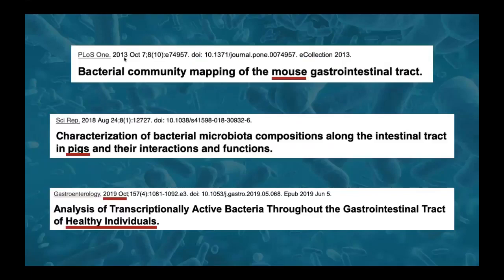Several studies illustrate the difference between the upper GI microbiome and the microbiome in the large intestine, including a bacterial community mapping of the mouse GI tract, a characterization of bacterial microbiota in pigs, and an analysis of transcriptionally active bacteria throughout the GI tract of healthy humans. These studies show pretty strong consistency — especially in the stark differences between the large and small intestine.